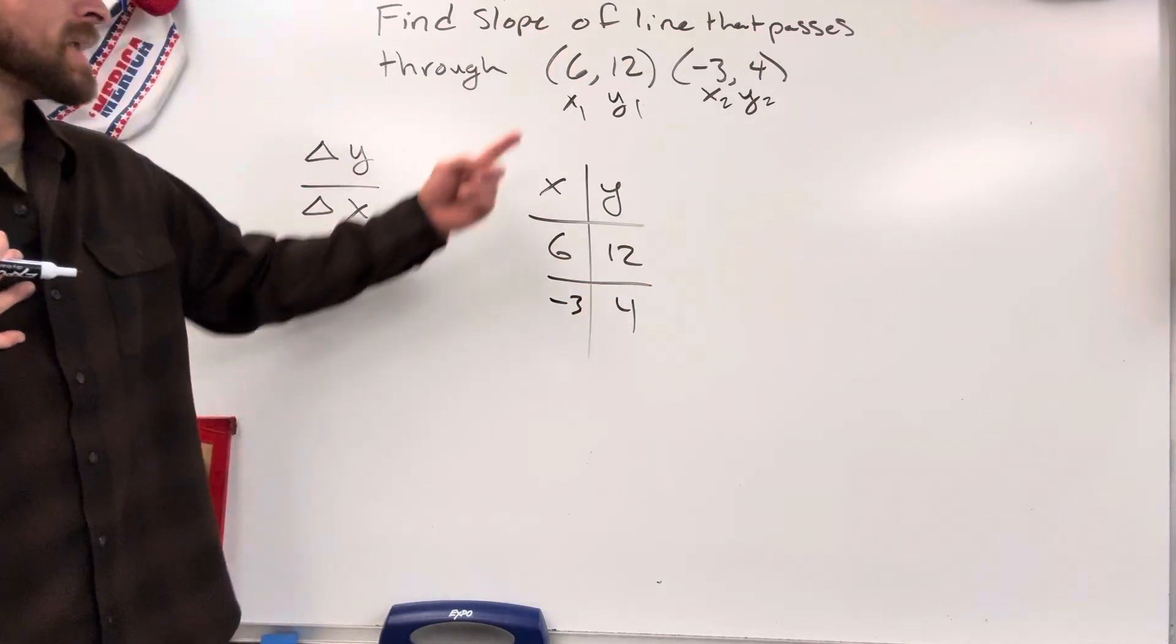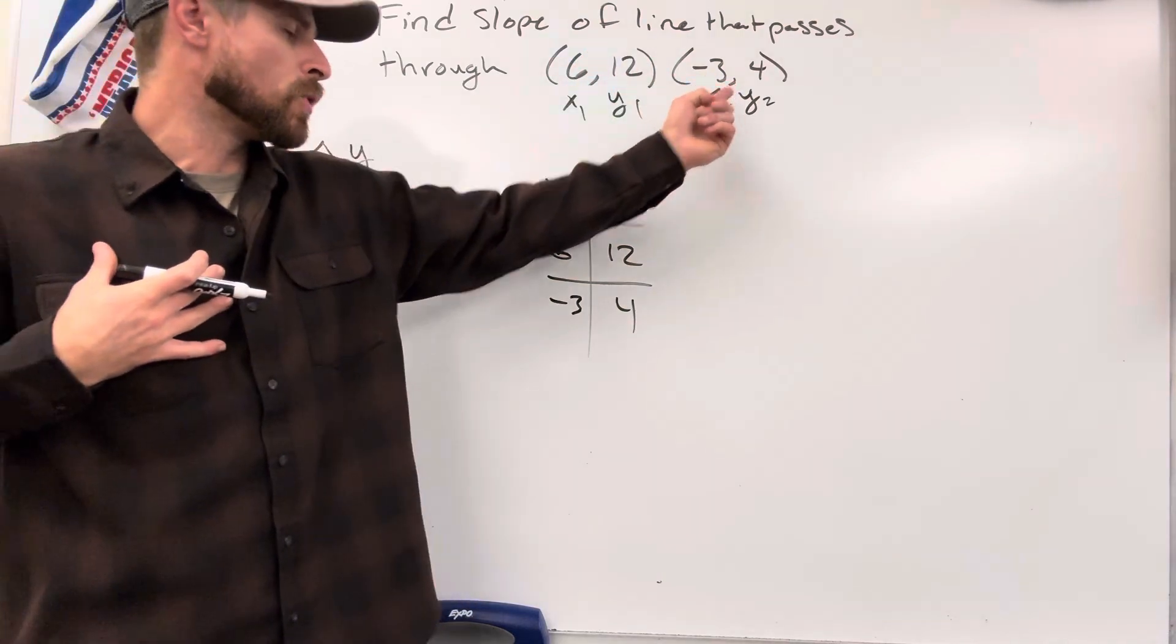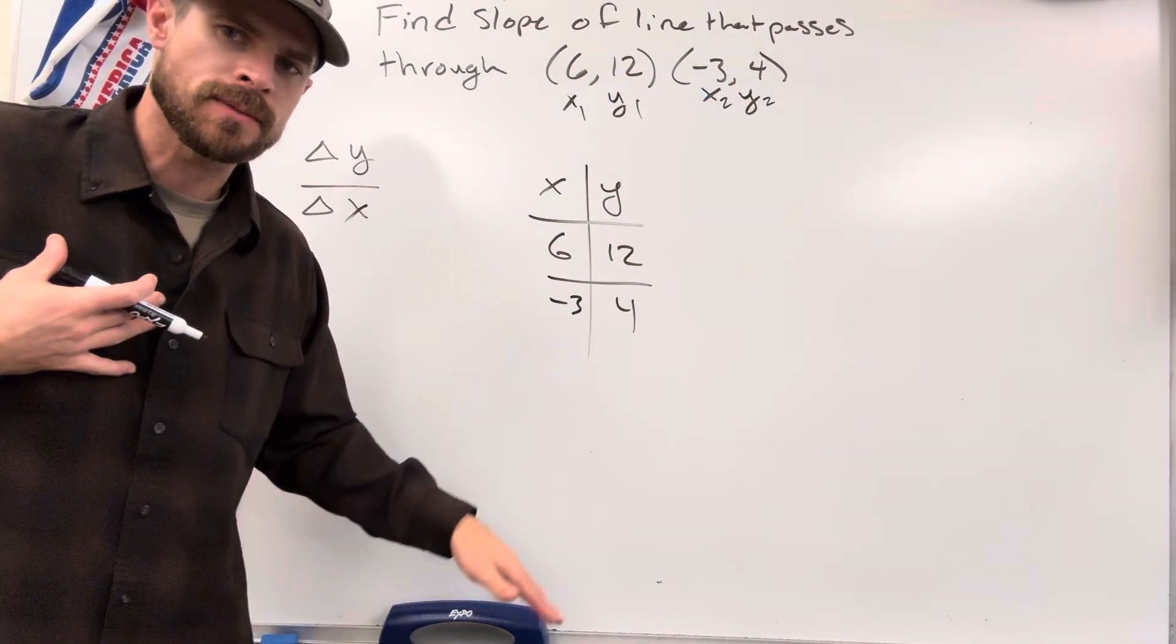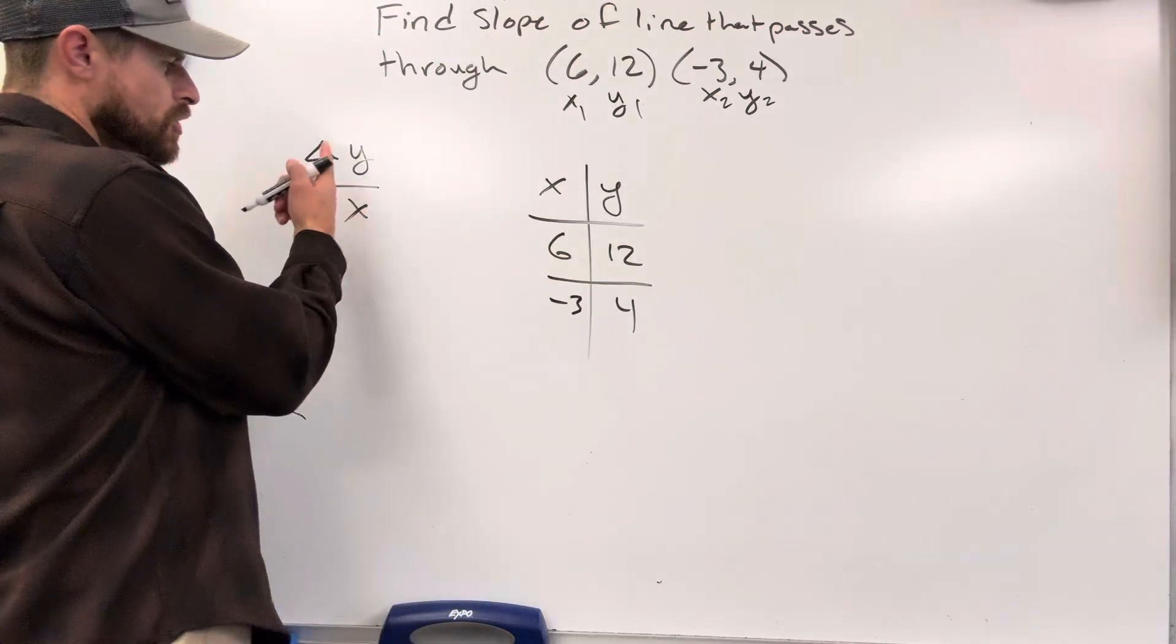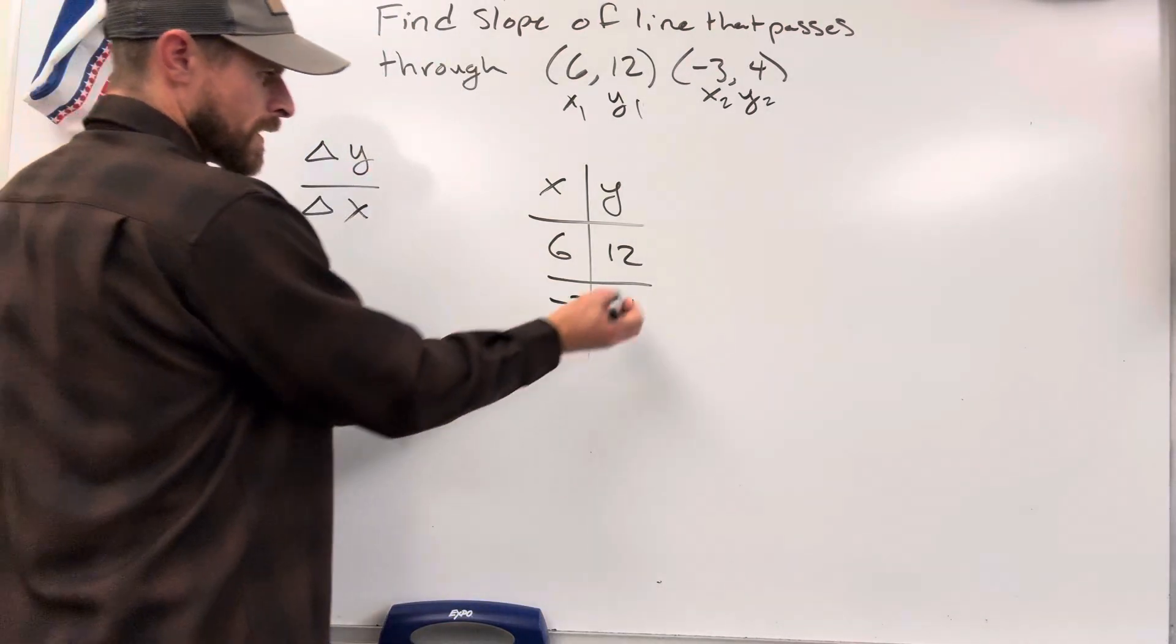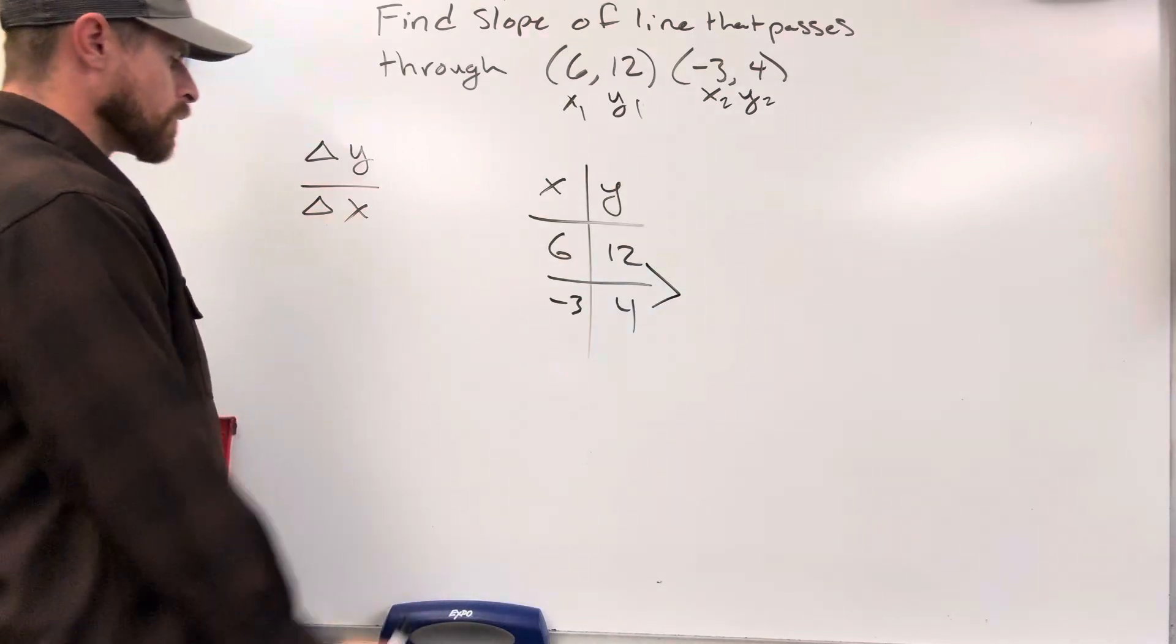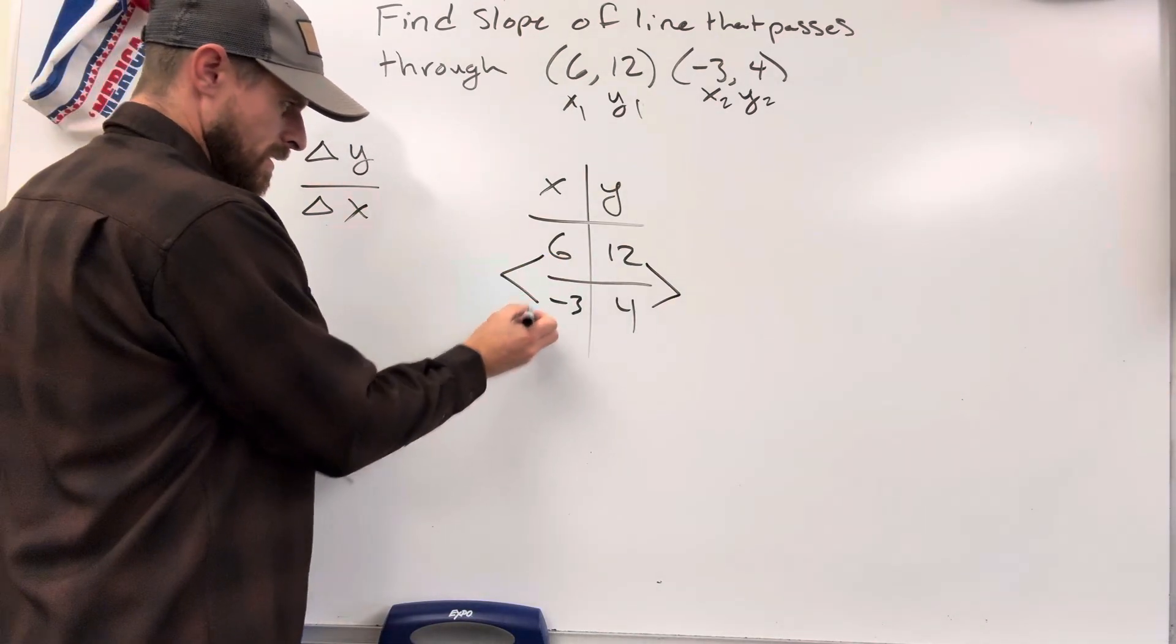If we're being told that it's a line that passes through these two points, we don't need any other information because we know it has to stay consistent. All we have to do is find our change in y values, that would be this, over our change in x values, that would be this.